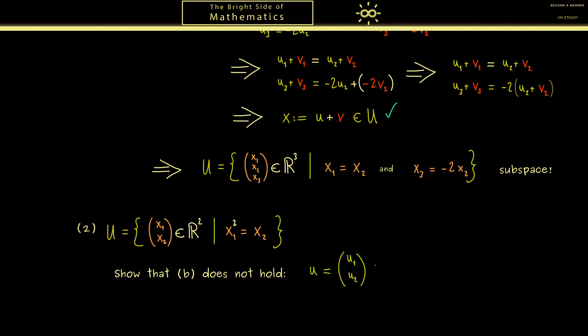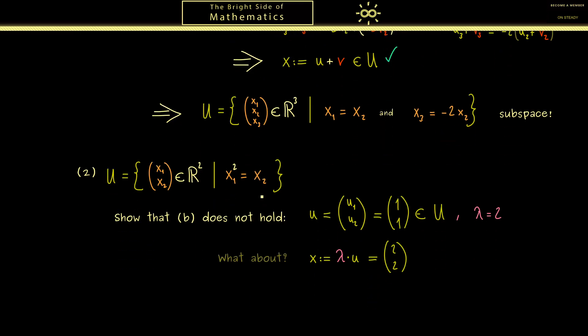For example what will work here is the vector u given as (1, 1) together with the scalar lambda equal to 2. Now what you first should see is (1, 1) is indeed an element in U because 1 squared is equal to 1. Now in the next step, as before, we can ask what is about the new vector x given as lambda times u? And of course we know this vector here is (2, 2). And now we have to check: do we have x₁ squared equal to x₂?